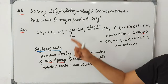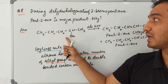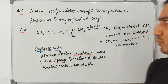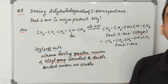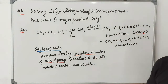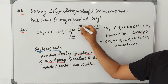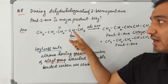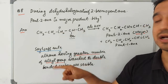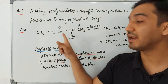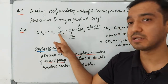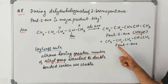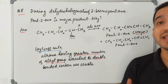Question eight: during dehydrohalogenation of 2-bromopentane, pent-2-ene is the major product — why? In this reaction, using alcoholic KOH, one hydrogen and one halogen are removed (elimination reaction). Br can be removed from the alpha carbon, and beta hydrogens can be removed from the adjacent carbons. If hydrogen is removed from one beta carbon you get pent-2-ene (major product); if from the other you get pent-1-ene.